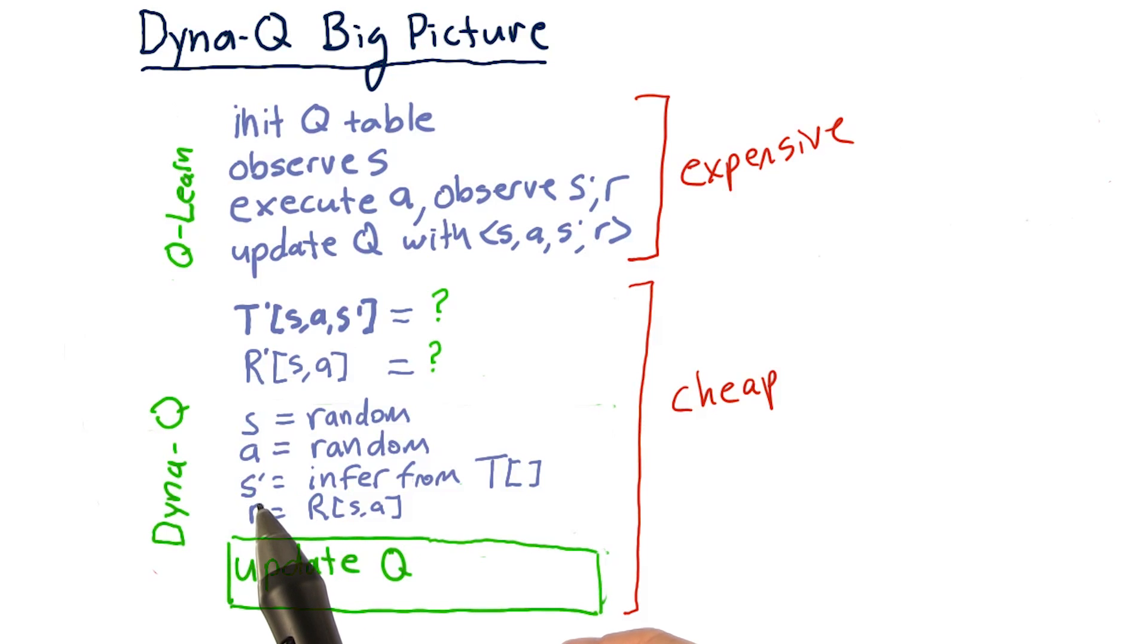Then we infer our new state, S prime, by looking at T. And we infer our reward, our immediate reward, R, by looking at big R, our R table.